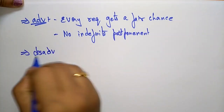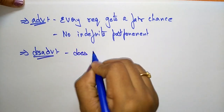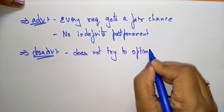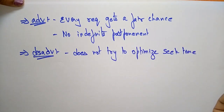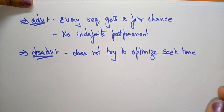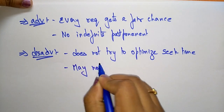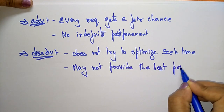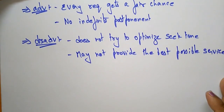The disadvantage of FCFS is that it does not try to optimize seek time. The main aim of a disk scheduling algorithm is to minimize seek time, but FCFS does not try to optimize it. Additionally, it may not provide the best possible service.